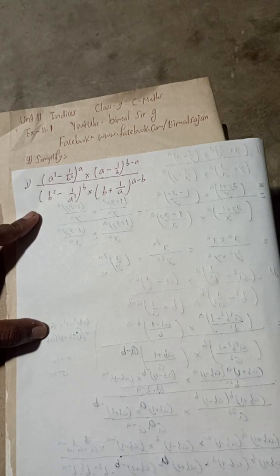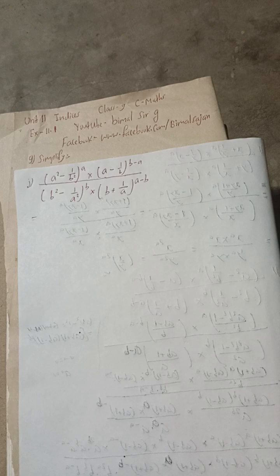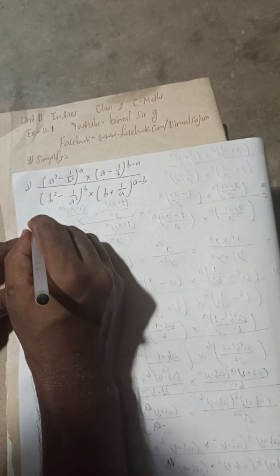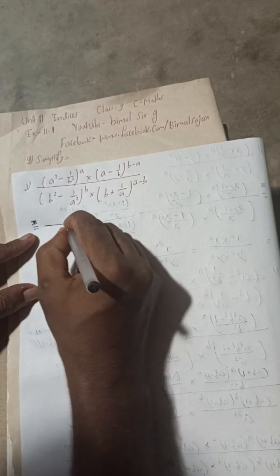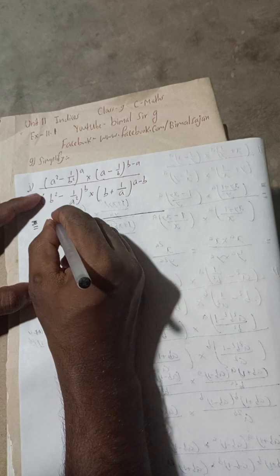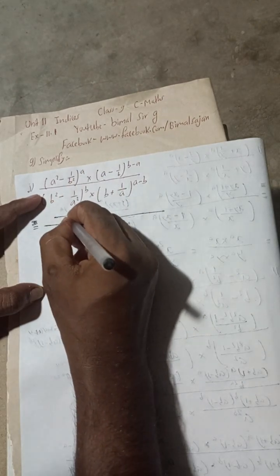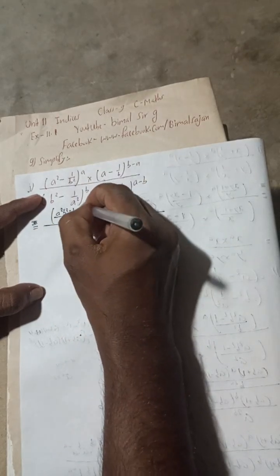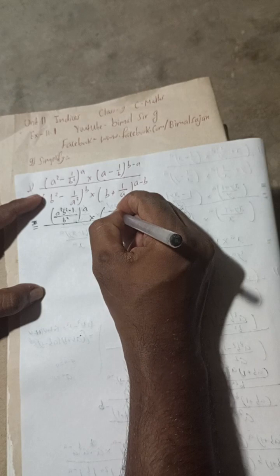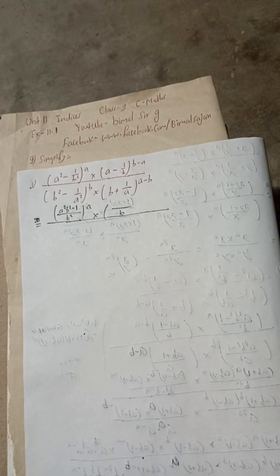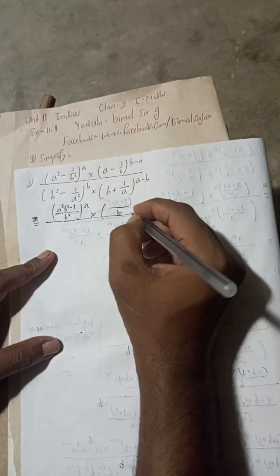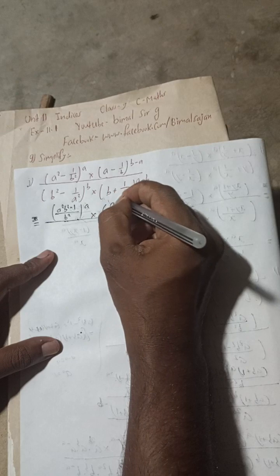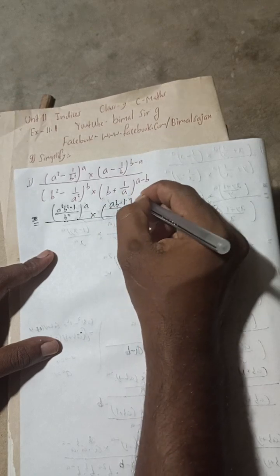Okay, now here — let me try to keep this equal at the center, along this line. Now, what is the LCM here? The LCM is b². So this is a²b² − 1, whole power a into... and again, b is the LCM here. So this becomes (ab − 1) whole power b minus a.